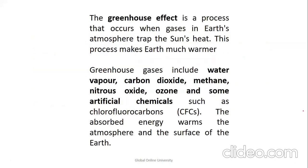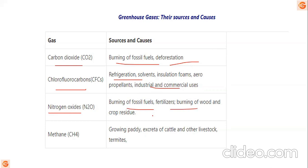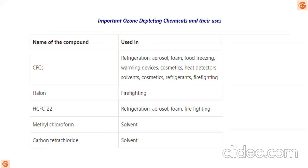The greenhouse effect is the process where gases in the Earth's atmosphere trap the sun's heat. Greenhouse gases include water vapor, carbon dioxide, methane, nitrous oxide, ozone, and artificial chemicals like chlorofluorocarbons. The absorbed energy warms the atmosphere and Earth's surface. Sources: carbon dioxide — fossil fuel burning and deforestation; chlorofluorocarbons — refrigerators, insulation foams, aerosol cans; nitrogen oxides — fossil fuel burning, fertilizers, crop residue burning; methane — paddy farming, cattle and livestock, termites.